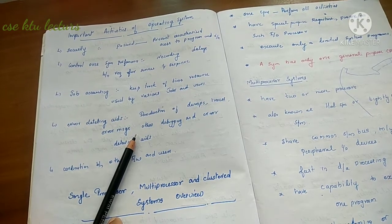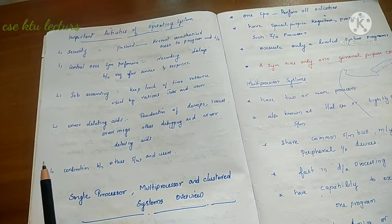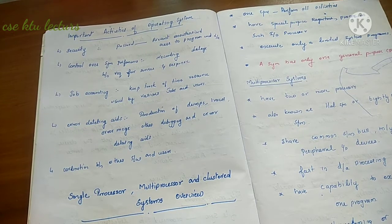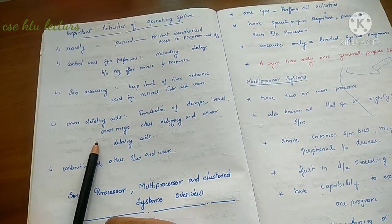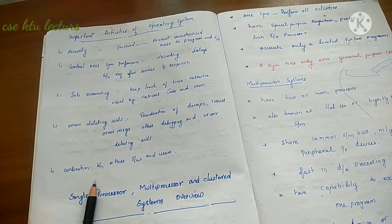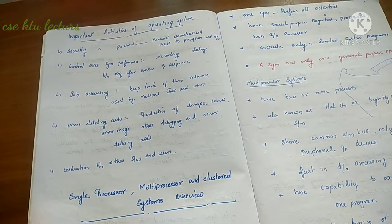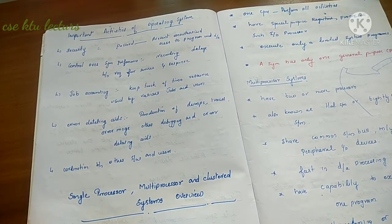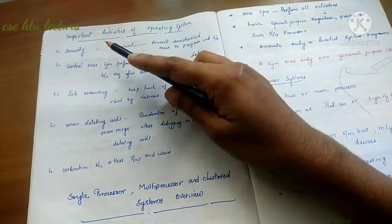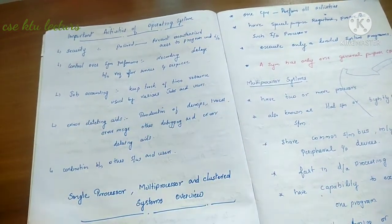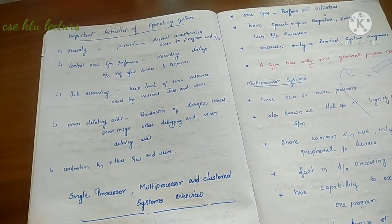Another OS activity is error detection aids — including production of dumps and traces, error messages, and debugging — which help monitor and solve system issues. Finally, coordination between other software and users is also an important activity. These are the functions of an operating system: the major functions plus additional activities such as security, system performance control, job accounting, error detection aids, and coordination.